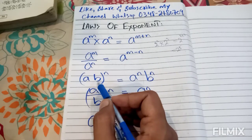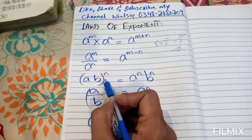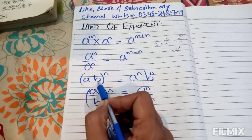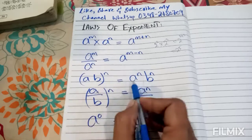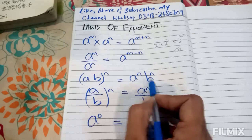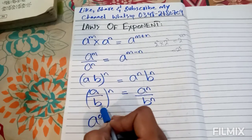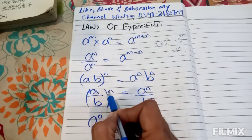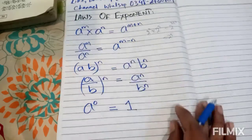And here we have the third law: a b the whole to the power n. If we have two bases in product and they have an overall power, that power becomes their individual power. This is the third law and this is the fourth law: a b to the power n is equal to a to the power n times b to the power n.